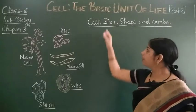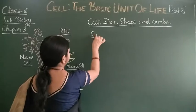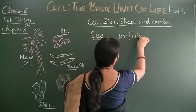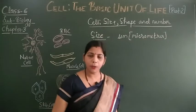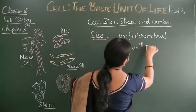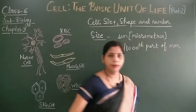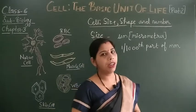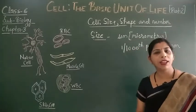Usually the size of the cell is measured in micrometers. This micrometer is 1/1000 part of a millimeter. That means most cells are very tiny, which we cannot see with our naked eyes, and we have to use a microscope for observing the cell.